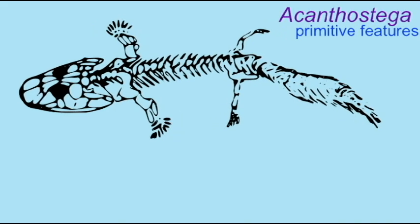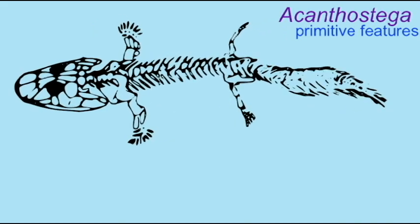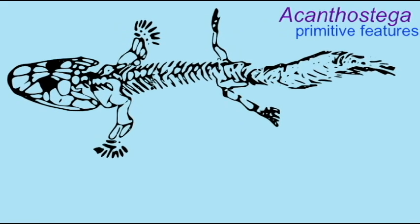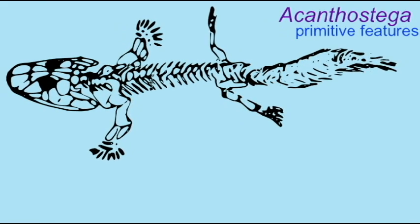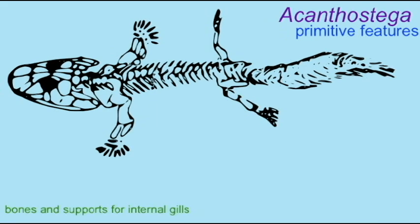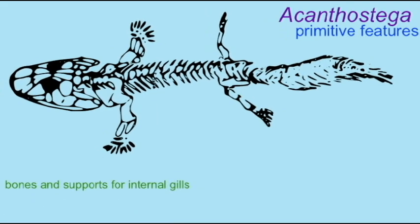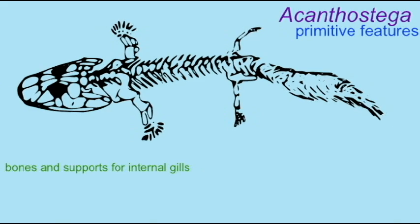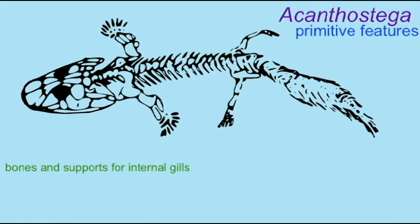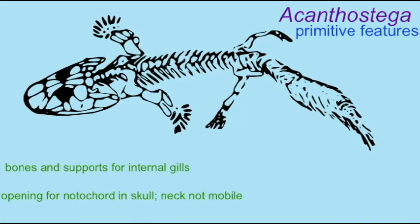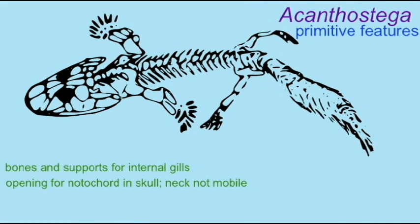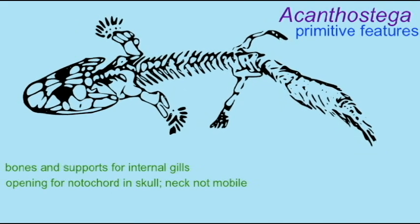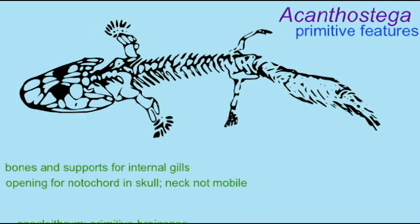The anocleithrum was present as well as a primitive brain case. The skull possessed grooves for a lateral line system, a sensory system which fish used. The ear was primitive in some respects. Very significantly, there was no sacrum — no attachment between the vertebrae and the hip. As a result, the legs were not able to support the body's weight on land. There was no ankle joint.